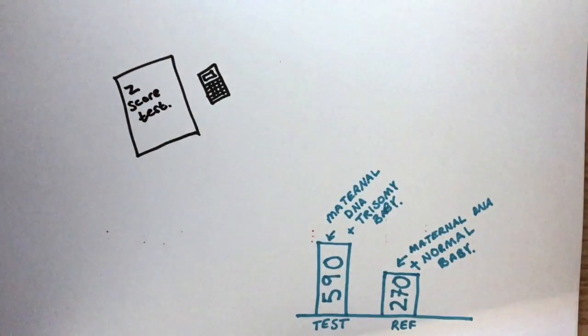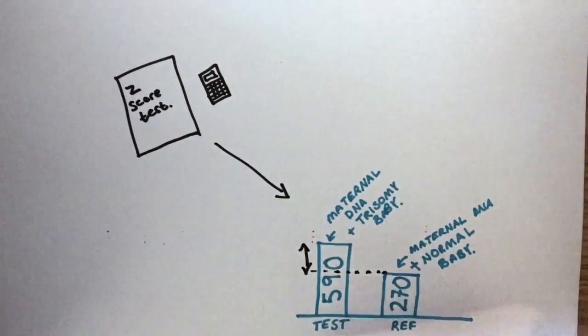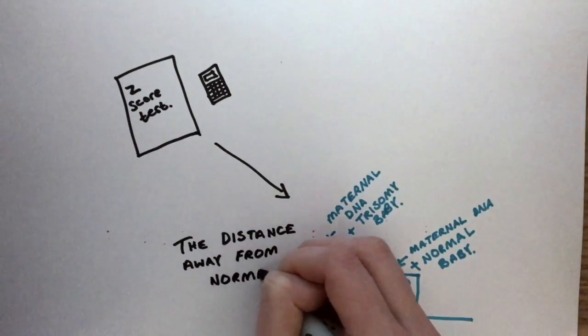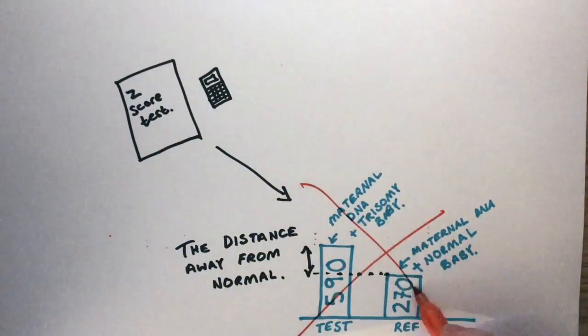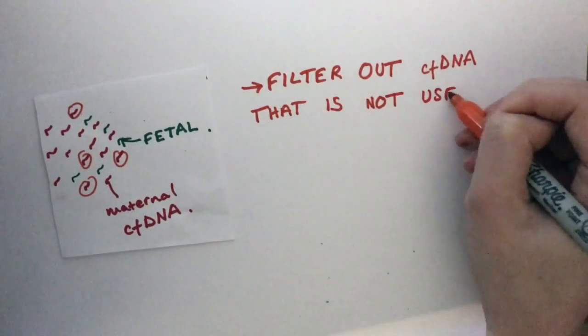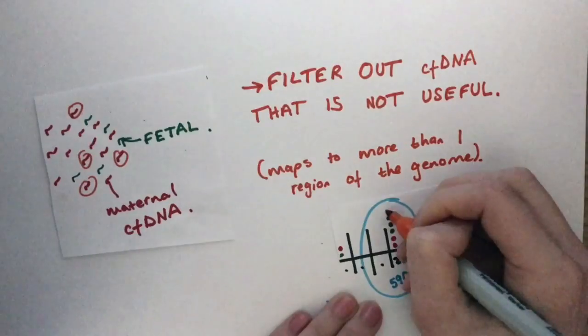Scientists would also do a Z-score test to clarify statistically that there is a difference. However, in reality, there's a lot of noise that cancels out that trisomy signal. How would we sort that out? You would filter out the CF DNA that is not useful. Not useful means it maps to more than one region of the genome.